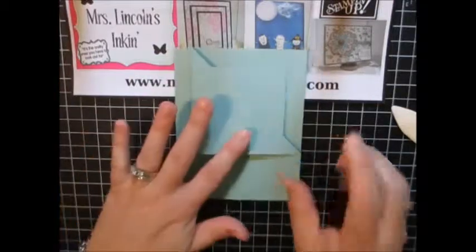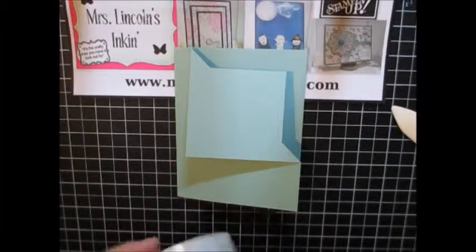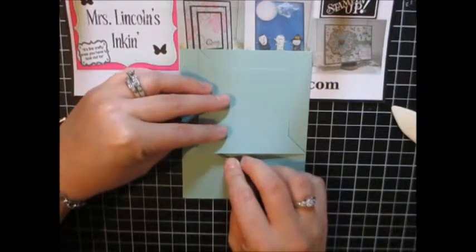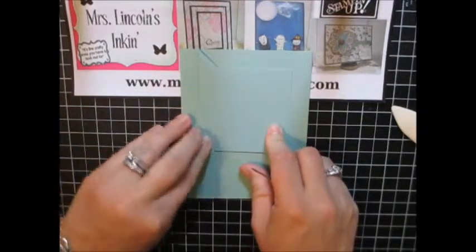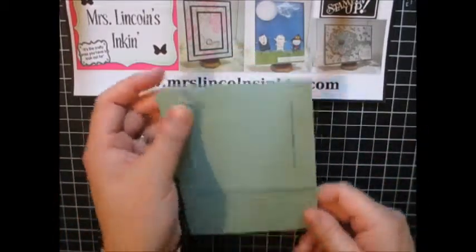It's pretty simple to make. So now what I like to do is just take a mini glue dot here, and I'm just going to put a mini glue dot right here in the corner, just to help that flap stay down. Stick it down there real quick. So now let's get to decorating our card.